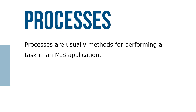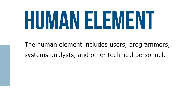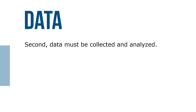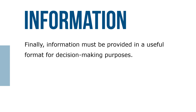The human element includes users, programmers, systems analysts, and other technical personnel. In designing an MIS, the first task is to clearly define the system's objectives. Second, data must be collected and analyzed. Finally, information must be provided in a useful format for decision-making purposes.